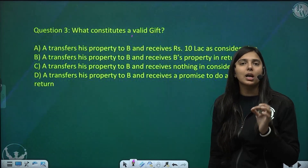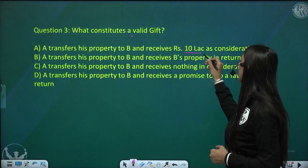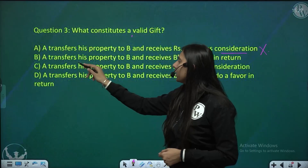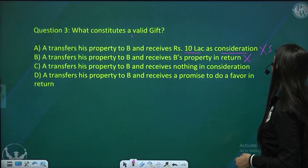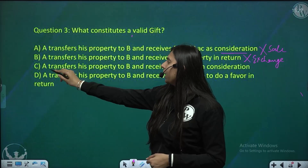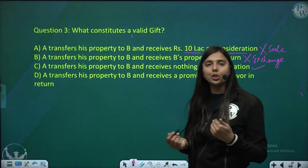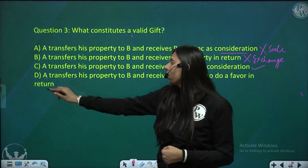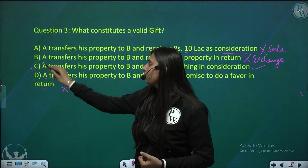Question 3: what constitutes a valid gift? Option A — A transfers property to B and receives rupees 10 lakh as consideration — that is sale, not a gift. Option B — A transfers property and receives B's property in return — that is exchange. Option C — A transfers property to B and receives nothing in consideration — this is a gift. Option D — A transfers property and receives a promise to do a favor — that also has consideration, so it is not a gift. The correct answer is option C.